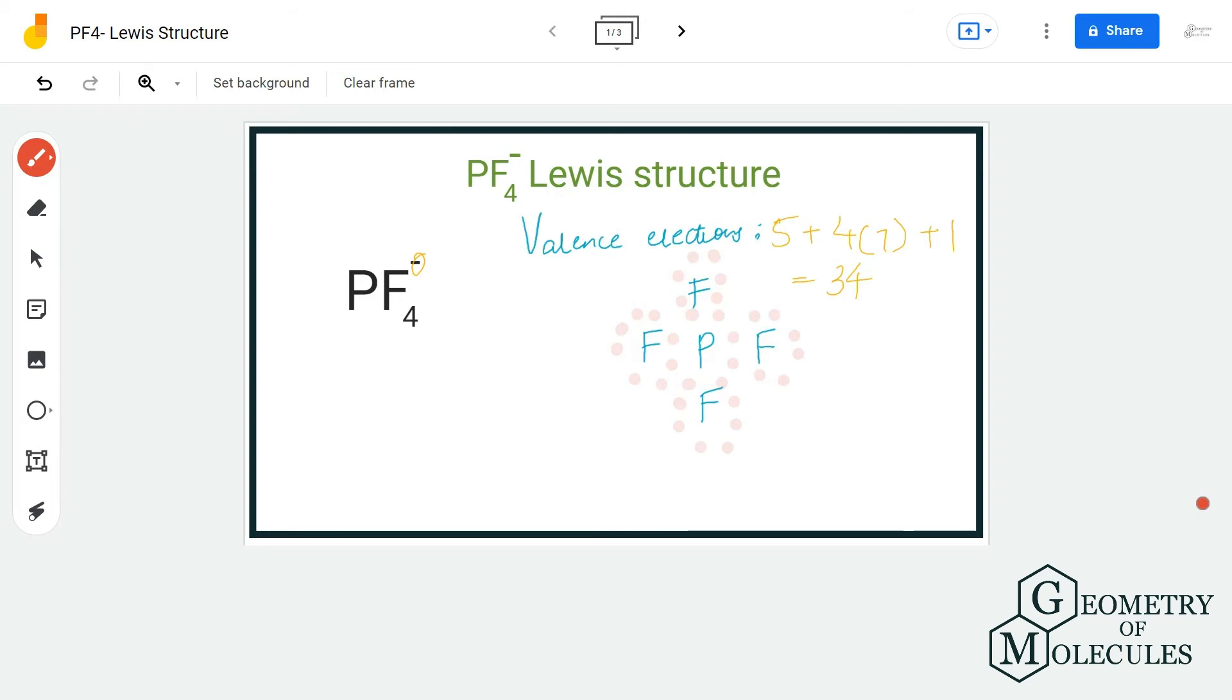Now you might wonder where do these two electrons go, because already phosphorus has eight valence electrons in its outer shell and all fluorine atoms have complete octet. Where do these electrons go? The answer is these electrons will take the position on the phosphorus atom.